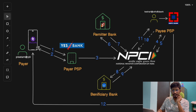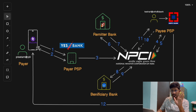The next step is the Authentication step. In this step, the PSP sends an authentication request back to you, asking you to approve the transaction. This is where you enter your UPI PIN in your UPI app to authorize the transaction.